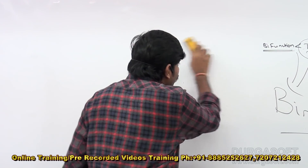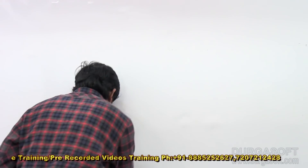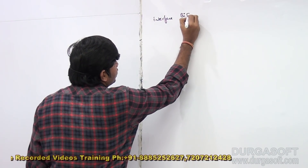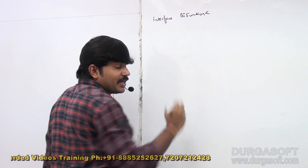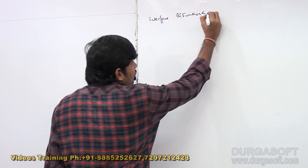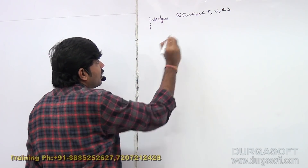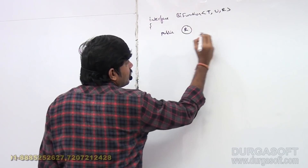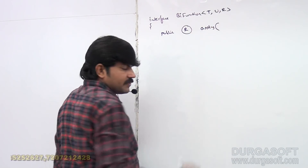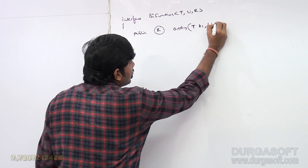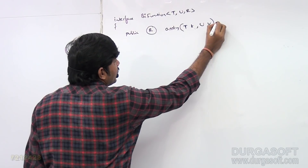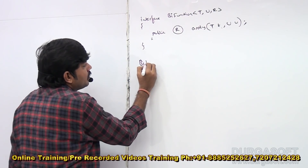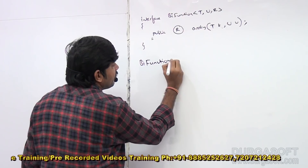Here observe that I have the BiFunction interface. BiFunction has how many type parameters? Three — T, U, R. The first two are input types and the next one is the return type. The method is: public R apply, with first argument T and second argument U. The remaining default methods are the same.